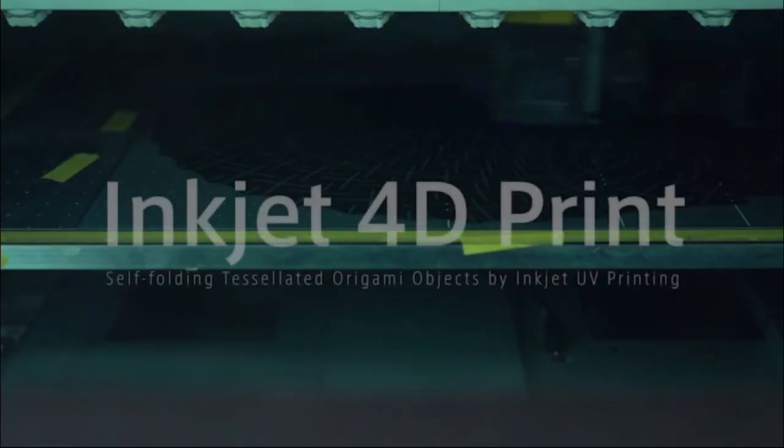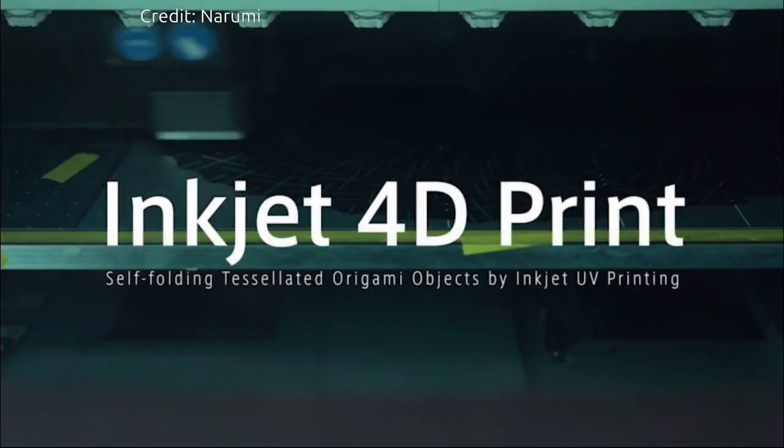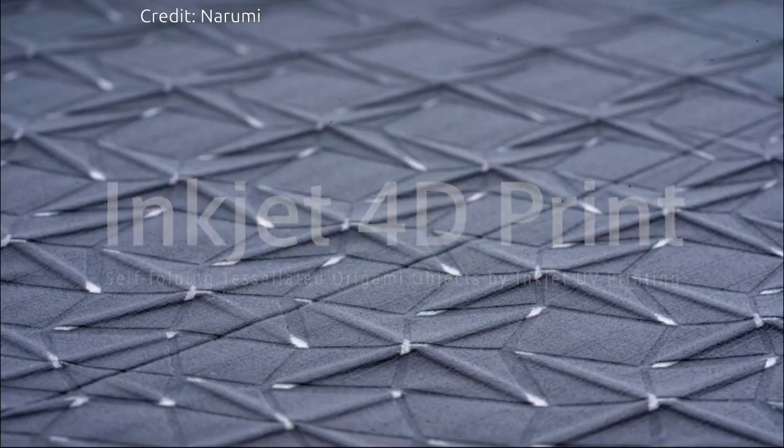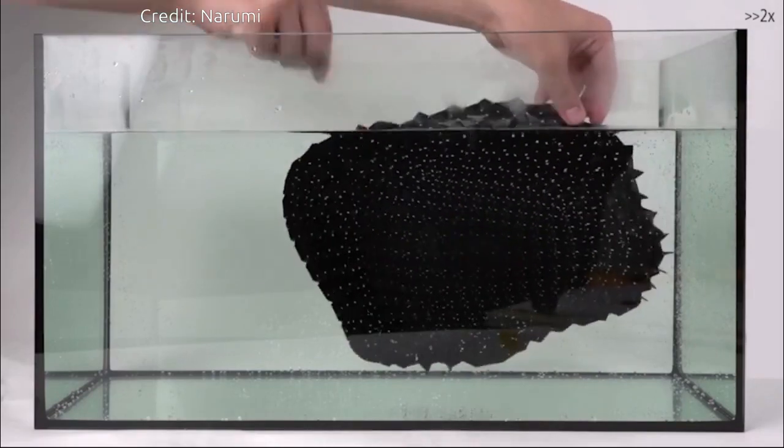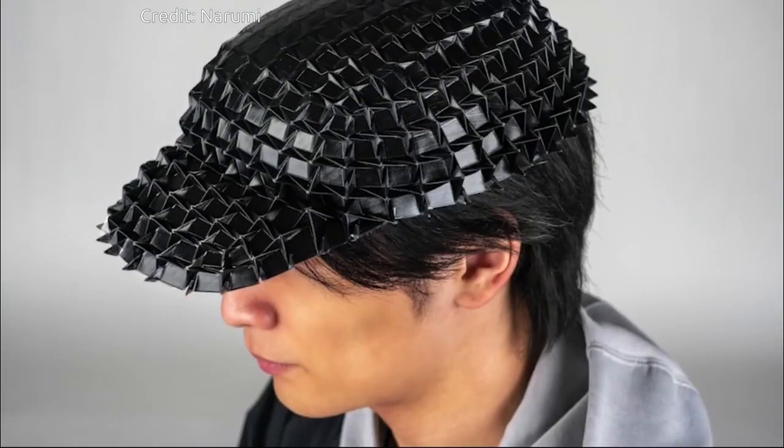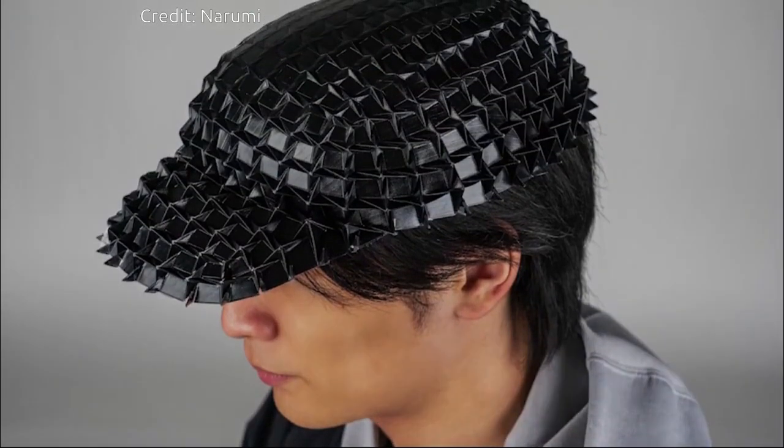3D printing of complex objects typically takes a long time due to the printing process necessarily laying down a large number of 2D layers to build up the object. The process usually wastes a lot of material required to support the unfinished object.